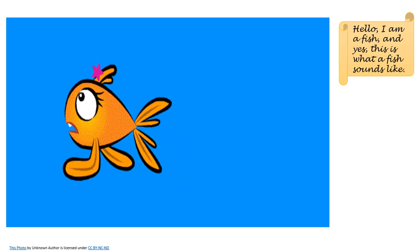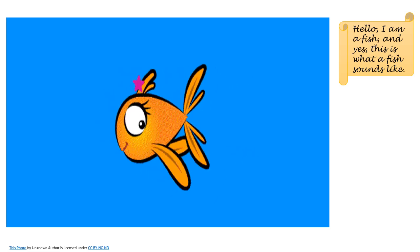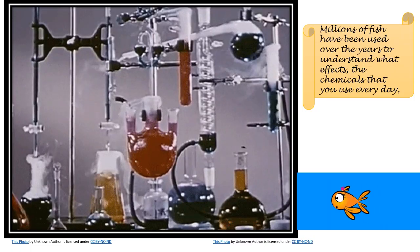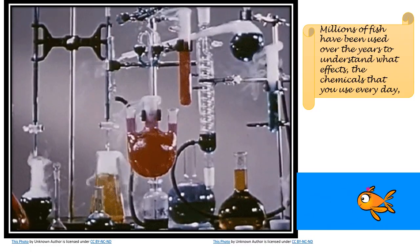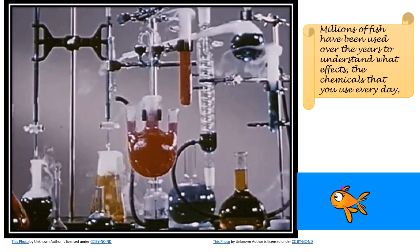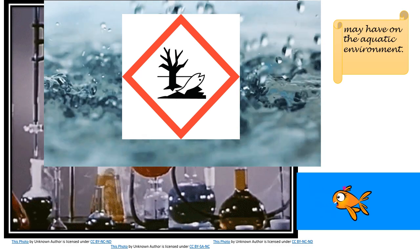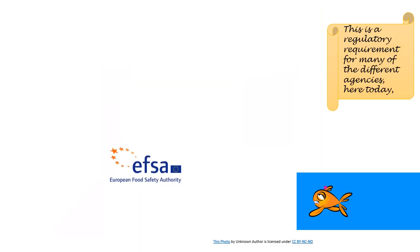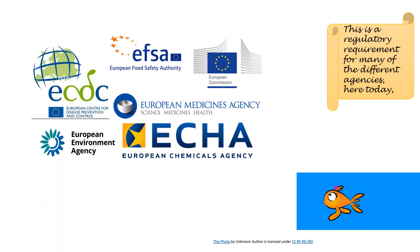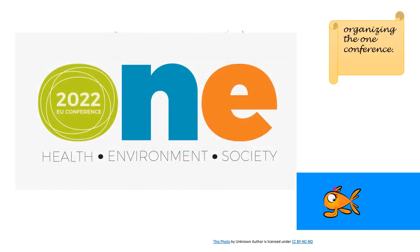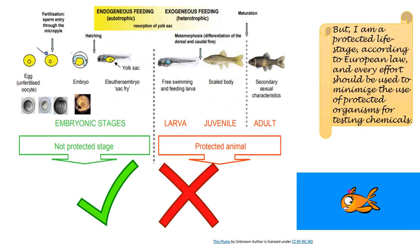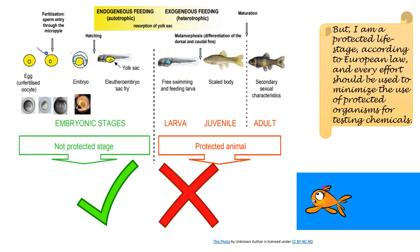Hello, I am a fish — and yes, this is what a fish sounds like. Millions of fish have been used over the years to understand what effects the chemicals that you use every day may have on the aquatic environment. This is a regulatory requirement for many of the different agencies here today. I am a protected life stage according to European law, and every effort should be used to minimize the use of protected organisms for testing chemicals.